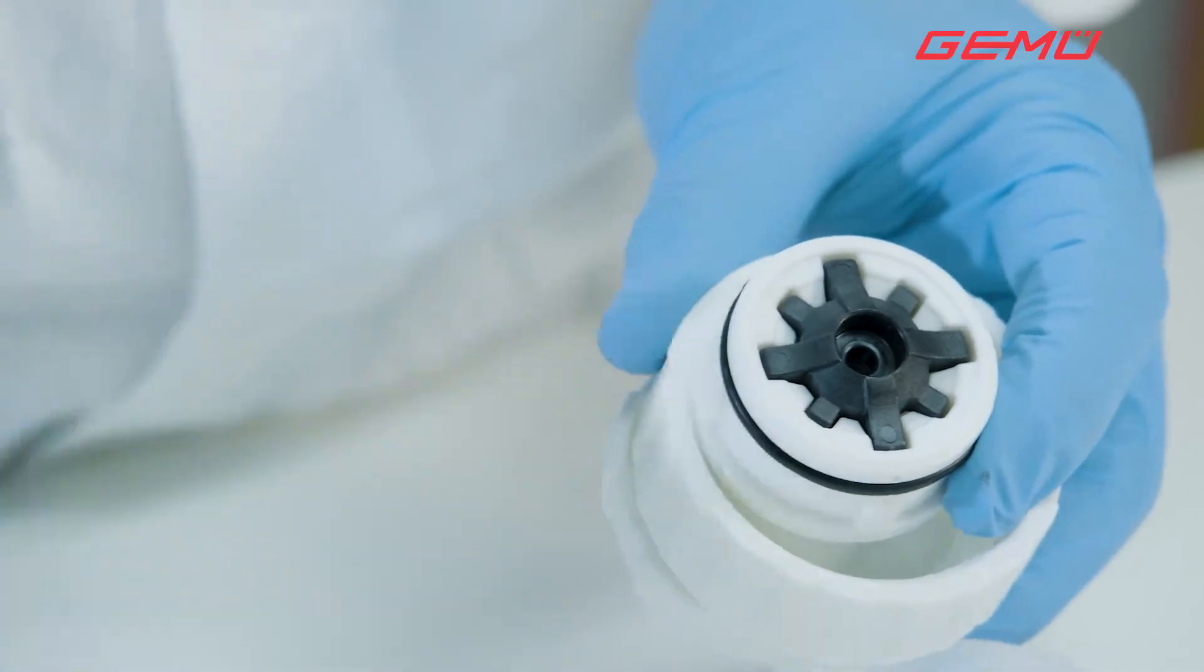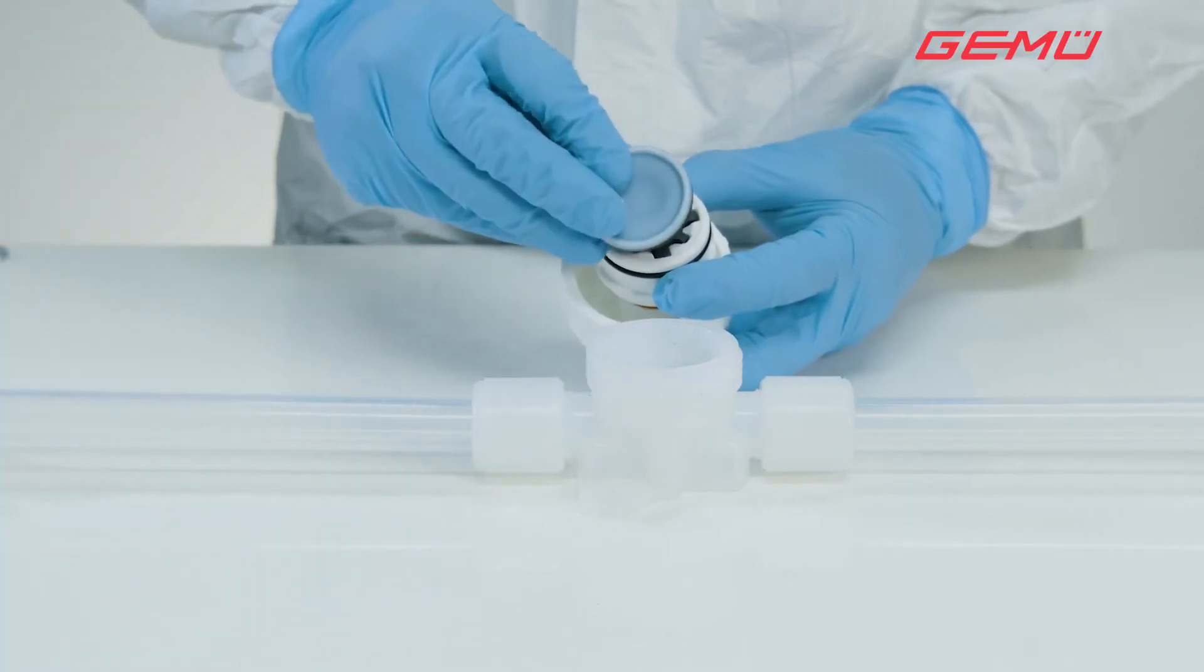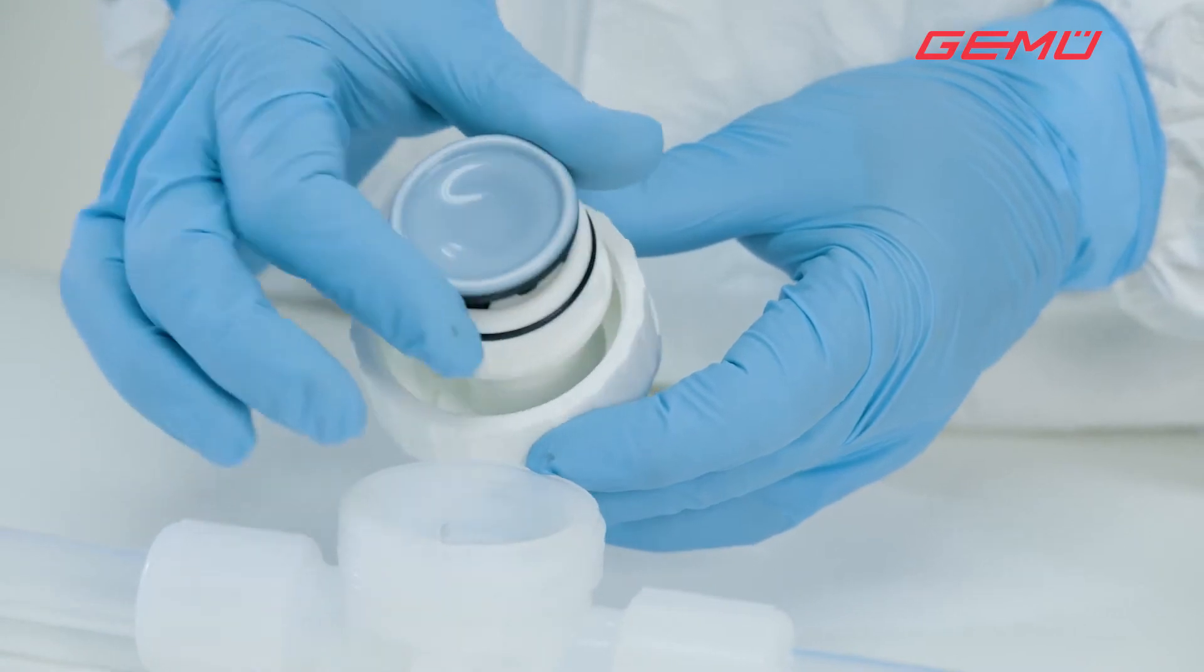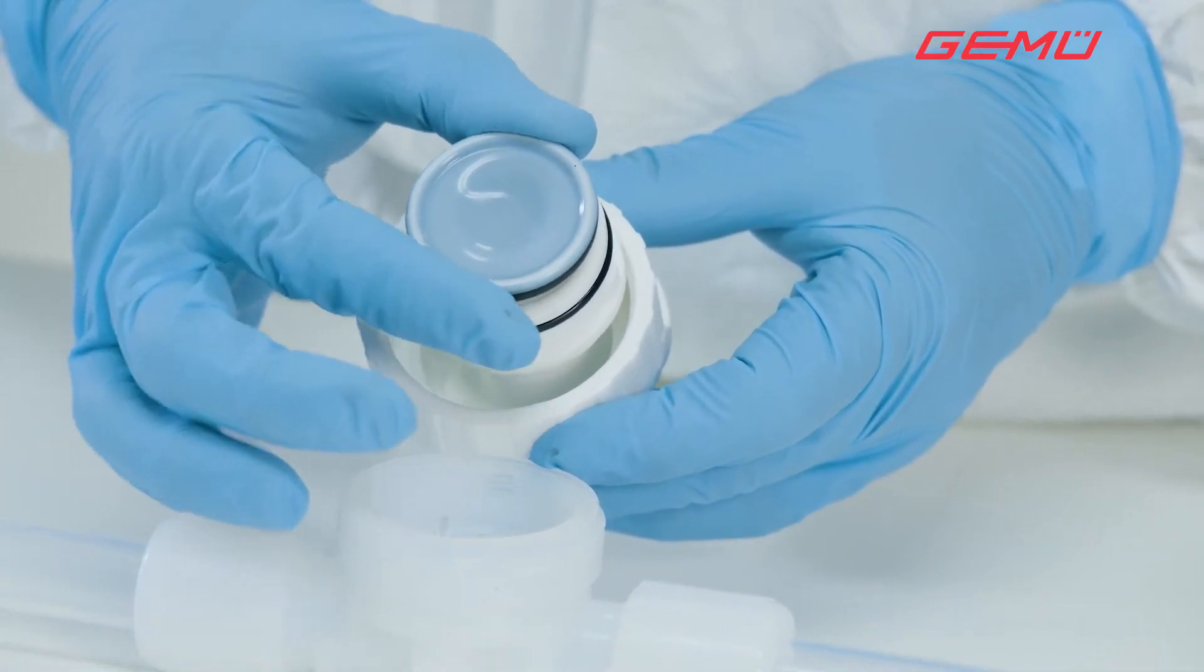Before screwing in the new diaphragm, remove the protection cap from the diaphragm pin. Then screw in the new diaphragm clockwise until resistance can be felt.